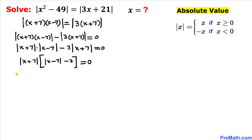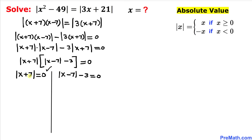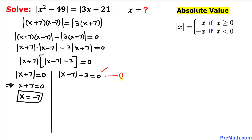We have two factors equal to zero. The first factor gives: the absolute value of (x plus 7) equals 0, which means x plus 7 equals 0, so x equals negative 7. We'll call the second factor equation 1: the absolute value of (x minus 7) minus 3 equals 0.